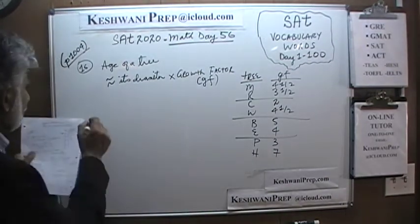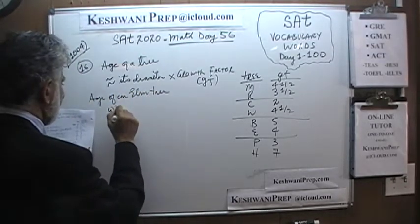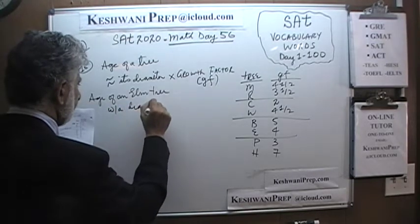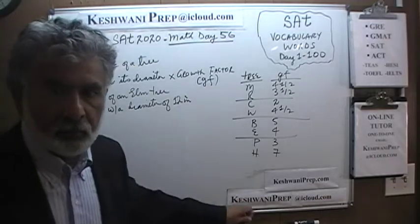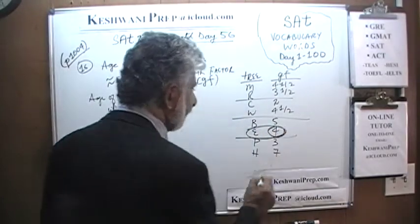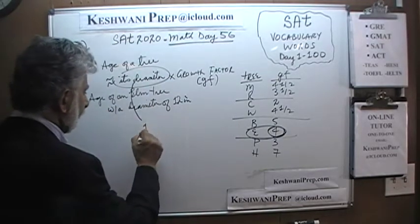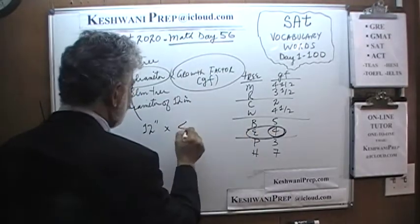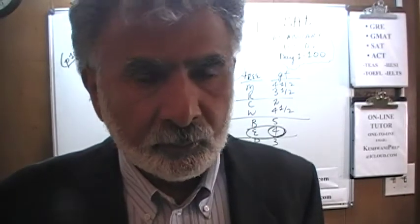The question is: what is the age of an elm tree with a diameter of 12 inches? It is a straightforward question. The diameter is 12 inches. The elm tree is right here in the table — that tells us the growth factor is 4. So it is just 12 times 4. The age is approximately 48 years old.